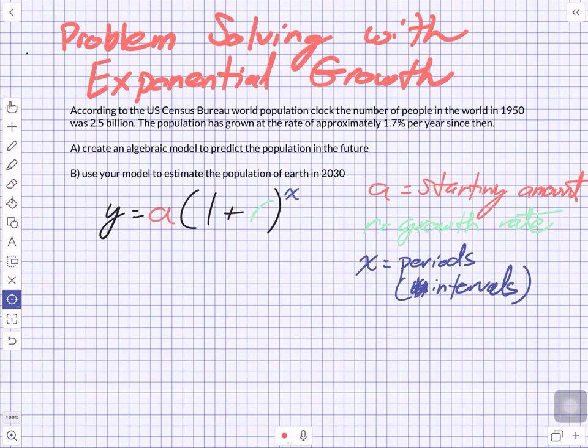So let's see if we can figure out what these three are. According to the problem, the number of people in the world in 1950 was 2.5 billion. So what value do you think is our starting point? 2.5 billion. That's going to be our starting point. We're going to say that a is equal to 2.5, and we have to make a little note, in billions.